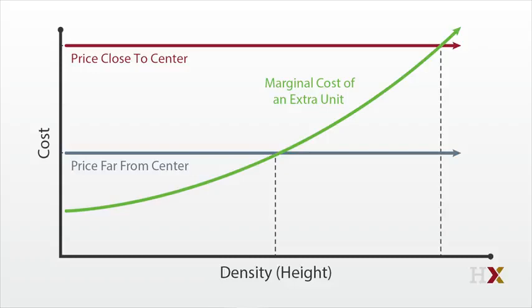Given that price differs with distance, we get a different density for each distance, which we can add to the original diagram. So the model predicts that as the distance from the city increases, density will fall because the value of space falls. Consequently, builders go for shorter, lower cost housing.